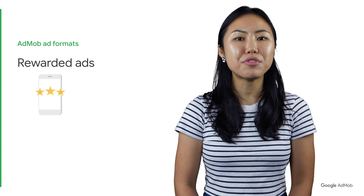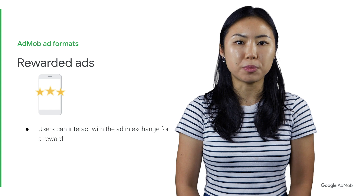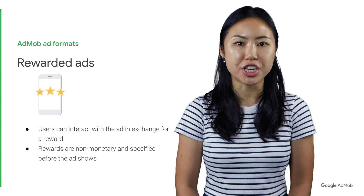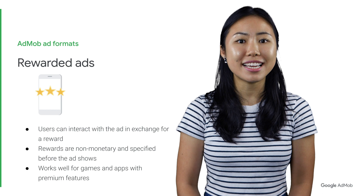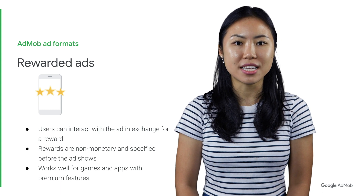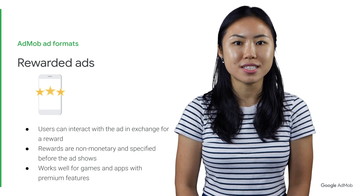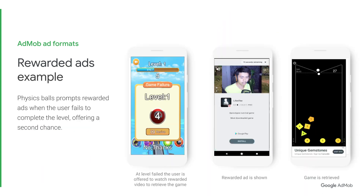Next, we have rewarded ads. This format gives users the option of interacting with ads in exchange for in-app rewards. For example, in a gaming app, users can play games, take surveys, or watch videos to earn rewards such as coins or extra lives. In this example, the Physics Balls game shows rewarded ads when users fail to complete the level, offering them a second chance.